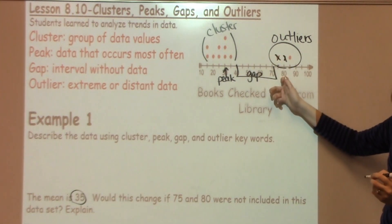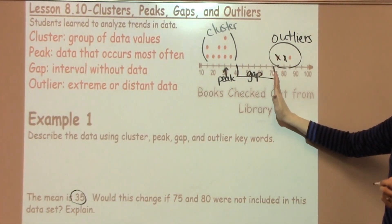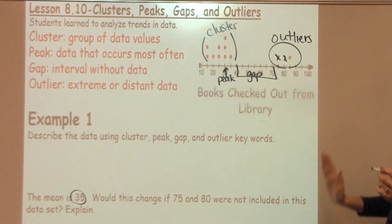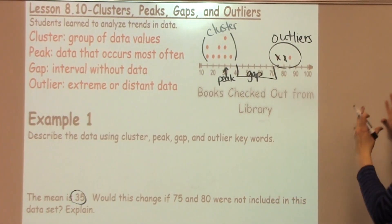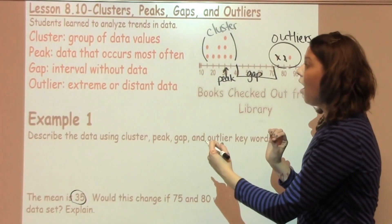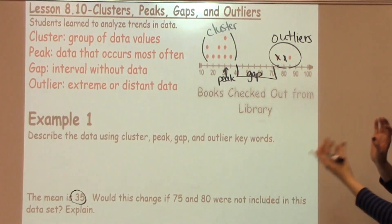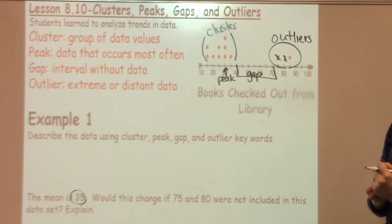Well, the 80 wouldn't really, but would the 75? It absolutely would because it would definitely change the values that I have. So would this change? We know that it would definitely help bring down our mean because it would be a lot closer. We'd have a lot more closer to our cluster. So this would definitely change our data.